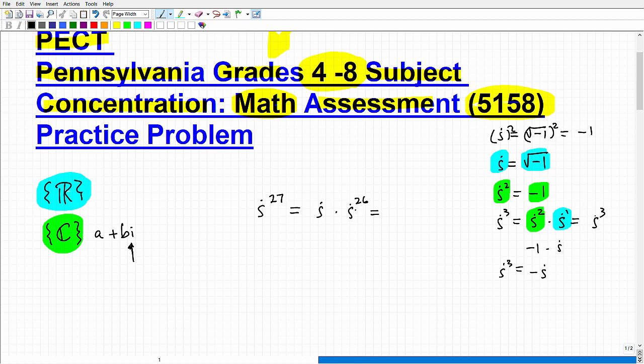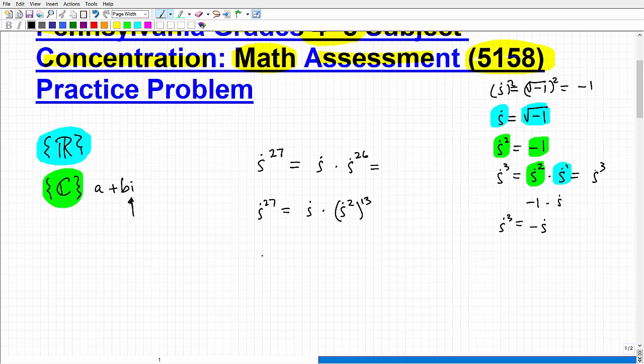i times i to the 26th, and the reason why I did that is now I can use another property of exponents. I'm going to write this to deal with this i to the 26th. Check this out: I can go i times i squared to the 13th power. i squared to the 13th power is the same thing as i to the 26th. So now I'm rewriting this problem so it's much easier to handle. I have i squared, or i to the 27th is the same thing as i times i squared to the 13th power. Now I just have this as i. I know that i squared is equal to negative 1. So that's going to be negative 1 to the 13th power.